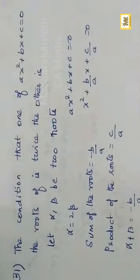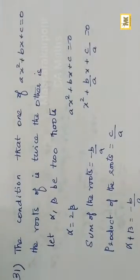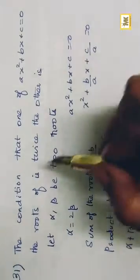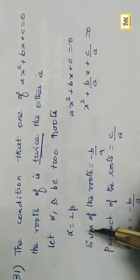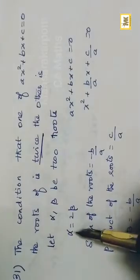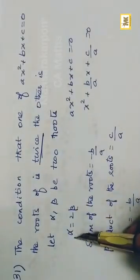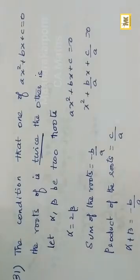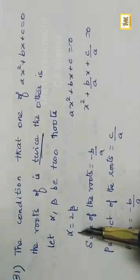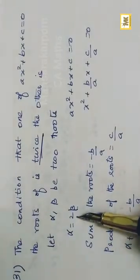Question 31: One root is twice the other. Let alpha = 2·beta. Sum of roots = -b/a and product of roots = c/a.